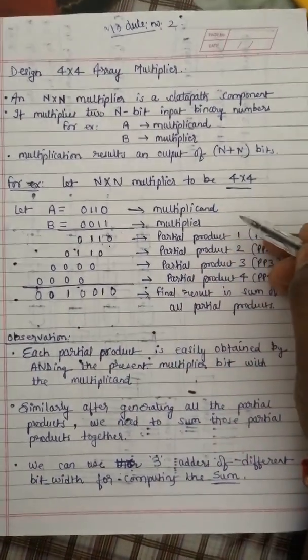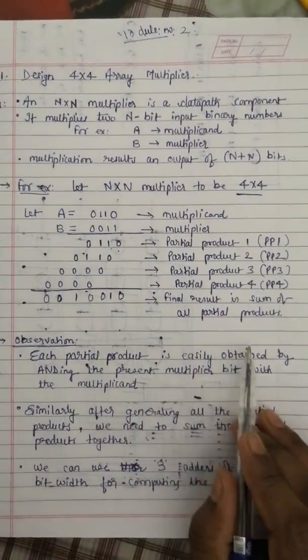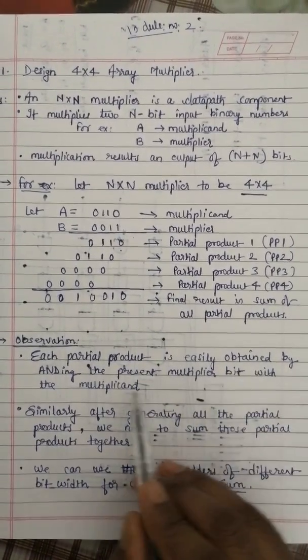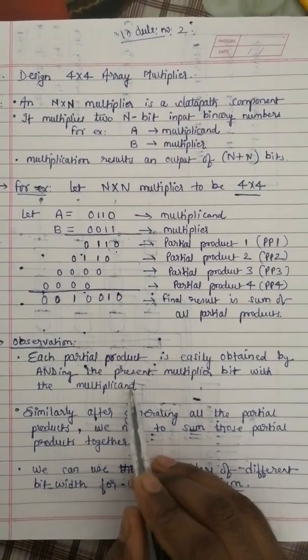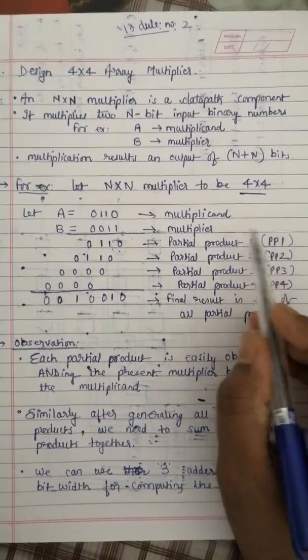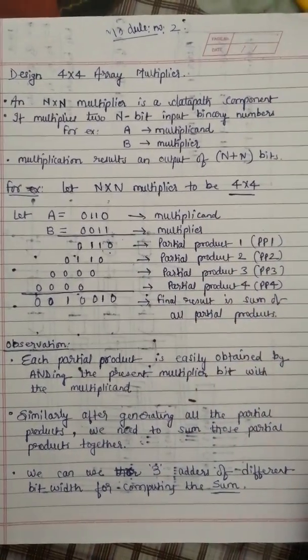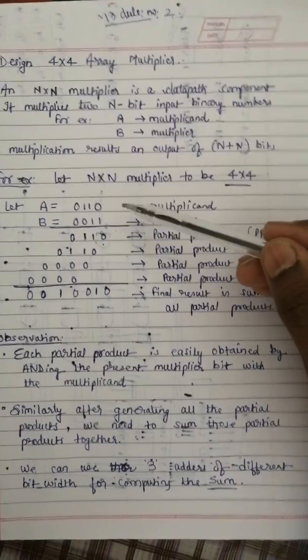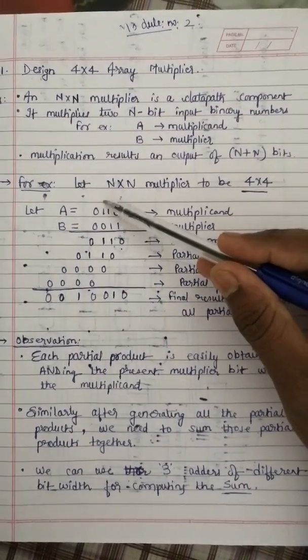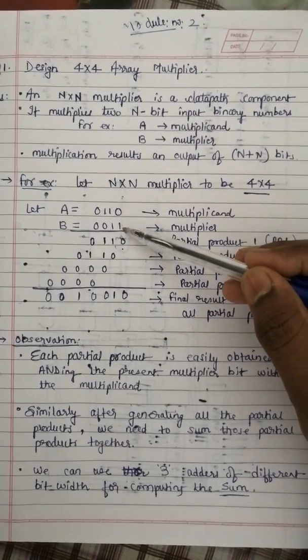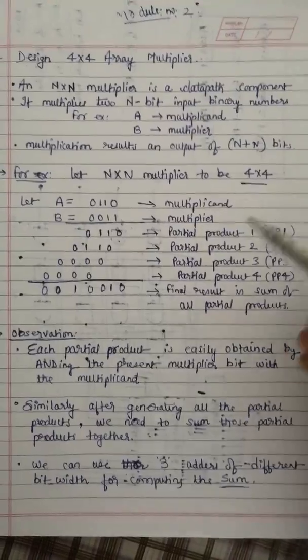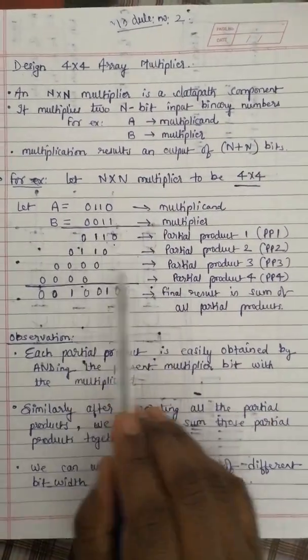Each partial product is easily obtained by ANDing the present multiplier bit with the multiplicand. For example, partial product number one is obtained by ANDing, meaning logical multiplication, of the multiplicand with the first multiplier bit. Similarly, after generating all the partial products, we need to sum them together.